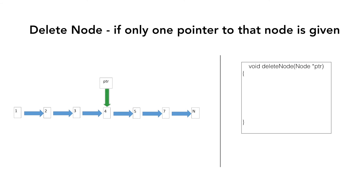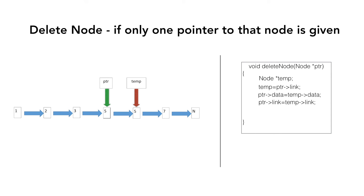Let's write the code to understand this better. In our function deleteNode, we are given only one argument — the pointer ptr pointing to the node we have to delete. We take another pointer temp and equate it to the link part of the node pointed by ptr, so temp now points to the next node containing value 5. Next, we copy its data into the node pointed by ptr, so ptr's node now contains value 5. Then we adjust the link part of ptr to point to the node containing value 7, by equating the link part of ptr to the link part of temp.